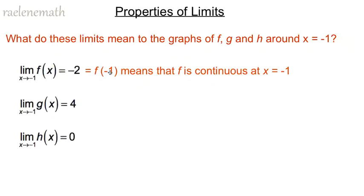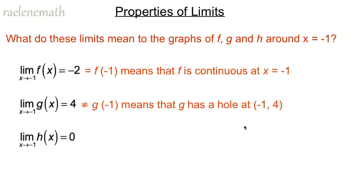The function value could be a different value from the limit value, or it could be not defined at all. In that case, when the function value doesn't equal the limit value but the limit value exists, the function has a hole at the x-coordinate, y-coordinate of the limit. What we do know is that all three limit values existing means the functions are at least almost continuous, and potentially continuous.